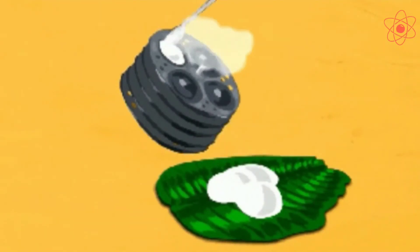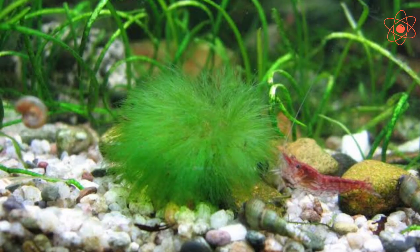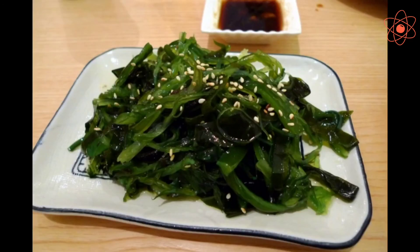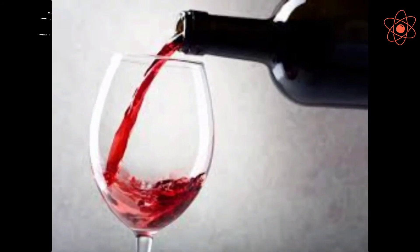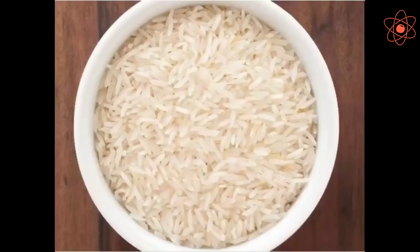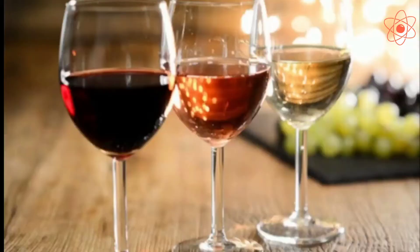Fourth, yeast is also used in day-to-day household food items like idli and dosa. Fifth, some algae like Chlorella and seaweeds are used as food — they are a rich source of proteins and minerals. Sixth, yeast is used for the production of alcohol, wine, and beer on a large scale. For this, yeast is added to grains like barley, wheat, rice, and crushed fruits. Yeast cells grow in the absence of oxygen and convert the sugar present in the crushed fruit and grains into alcohol.